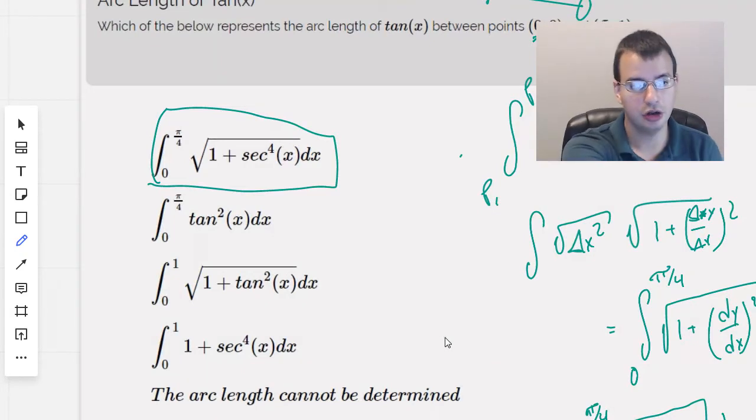So yes, final answer, 1 plus secant to the fourth of x, quantity square rooted from 0 to π/4. Thank you, see you next time.